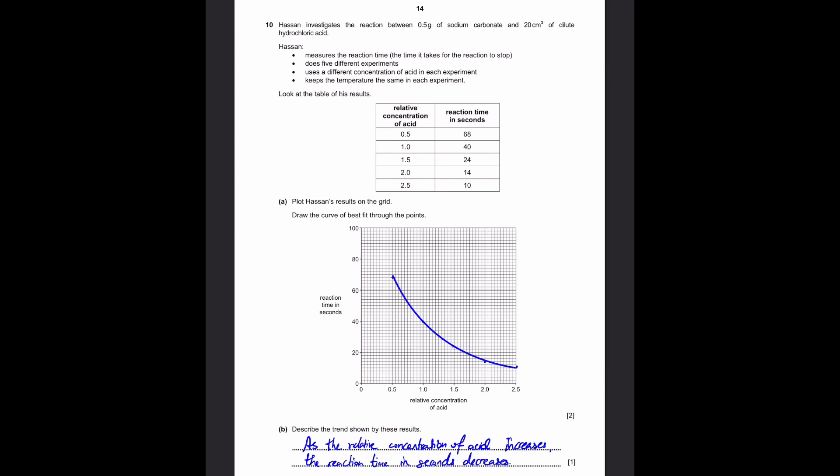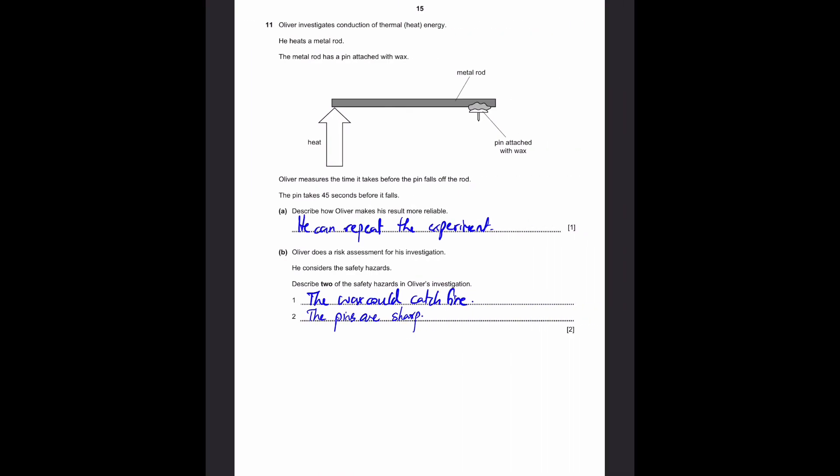Part B: Describe the trends shown by these results. Of course, we can see that as one increases, the other decreases. Because relative concentration is the independent variable, we can say as the relative concentration of acid increases, the reaction time in seconds decreases. That's our answer.